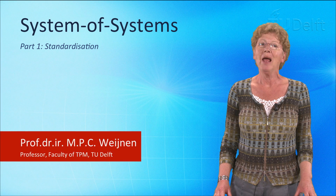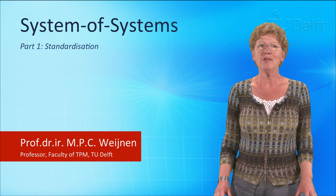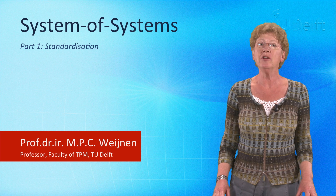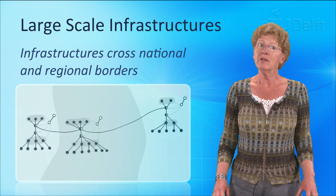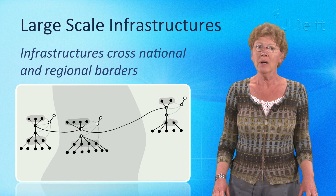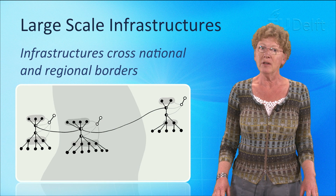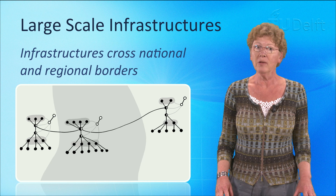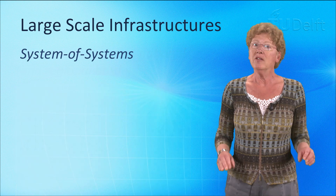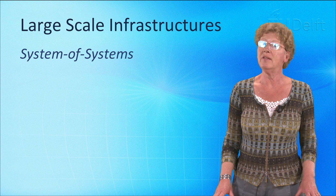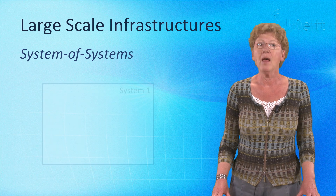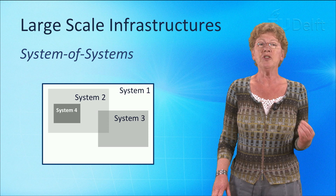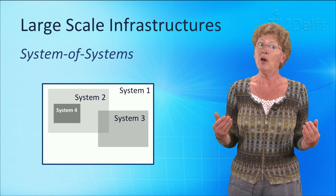Welcome back to the course. In previous parts of the course we explained how large-scale infrastructures emerge through interconnection across regional and national borders. Continental electricity infrastructure is a system composed of national systems, which are composed of regional systems, which are in turn composed of local systems. Such a constellation of systems is known as a system of systems. The aggregated system can only function as a system thanks to the adoption of interconnection and interoperability standards.